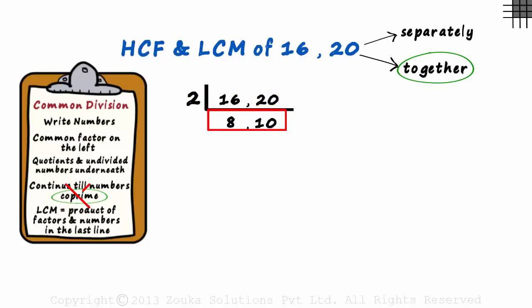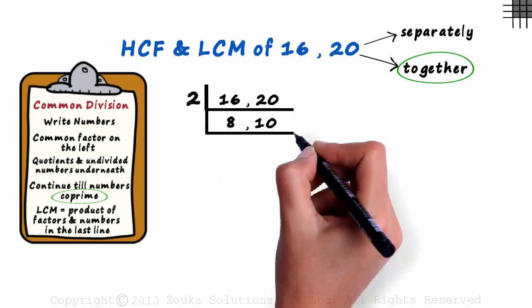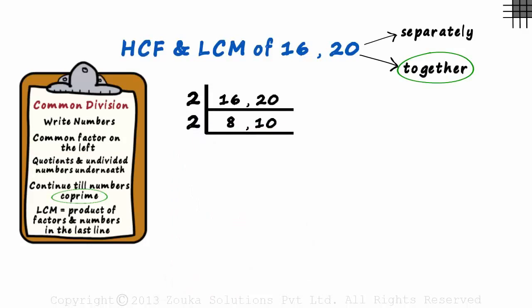Since these numbers are not co-prime, we go back to the second step and continue the process. They have two as their common factor. Two times four is eight, two times five is ten.